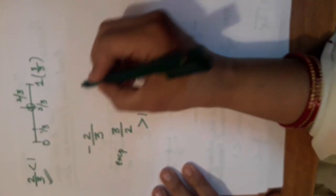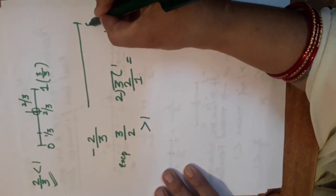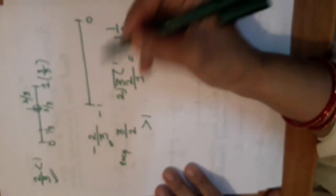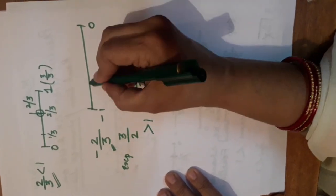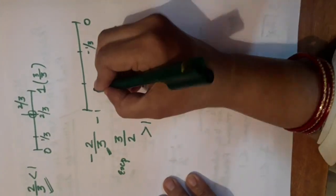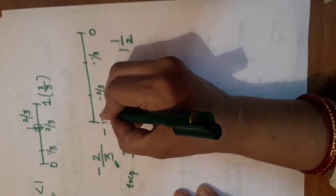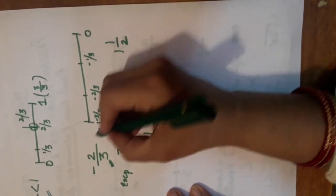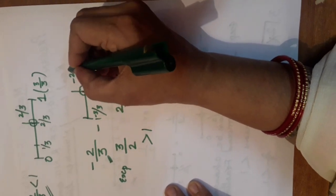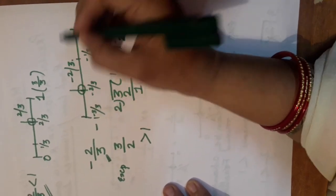If I have to place minus 2 by 3, then again what to do? To left side I have to move. From 0 to left side I have to move. 0 to minus 1. Again I have to do how many parts? The denominator, number of denominator, it is 3. So I have to divide it in 2 equal parts. So this is 1st part, 2nd part and 3rd part. But I have to highlight minus 2 by 3. Yeah, this is minus 1 by 3 and this one is minus 2 by 3.